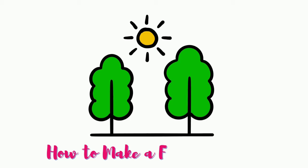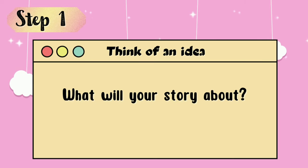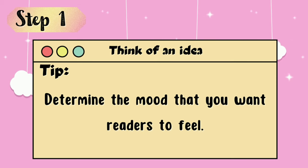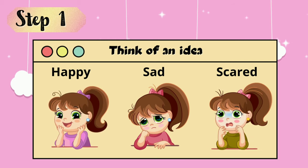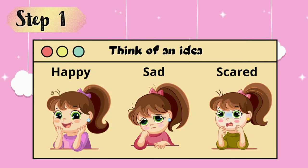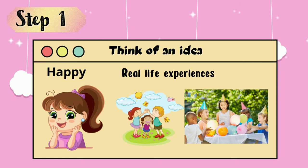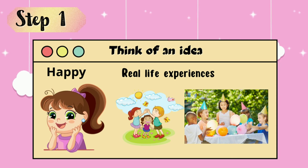Let's study how to make a fictional short story. Step 1: Think of an idea. What will your story be about? Also, determine the mood that you want the readers to feel — do you want them to feel happy, sad, or scared? For example, for a happy mood, you may include real-life experiences like when you're playing with your friends or when celebrating your birthday.